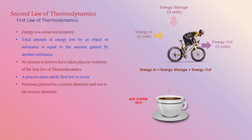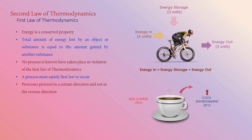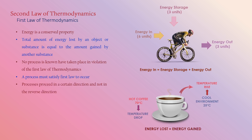The second example involves hot coffee and a cold environment. Heat flows from the hot coffee to the cold environment, resulting in a rise in temperature of the surrounding air and a drop in temperature of the coffee. Based on this diagram, the total energy lost from the hot coffee must be equal to the total energy gained by the environment. These are the two examples of the principle of conservation of energy.